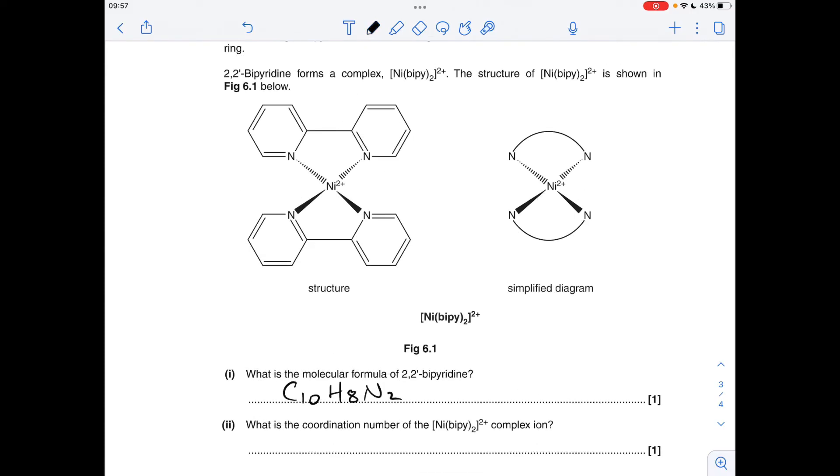What's the coordination number of this complex ion? Coordination number just tells you the number of coordinate bonds that are going to the central metal ion. It's not the number of ligands—that's a common mistake I would see. The answer is four.